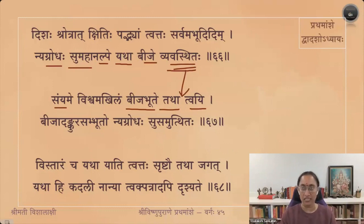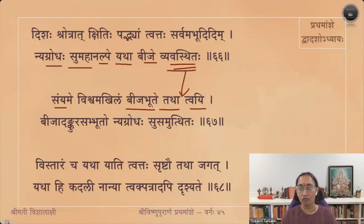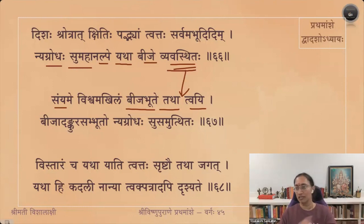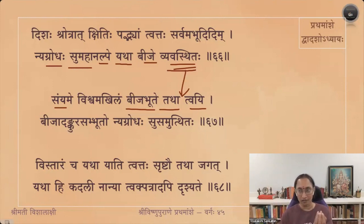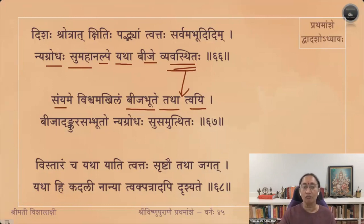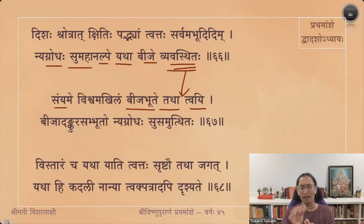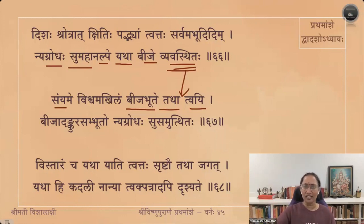Bija Bhute Samyame Tvai — you who are the controller, Samyama, and you are the Bija; everything, Vishwam Akhilam, Vyavastitaha, is present in you. Bijaat Ankura Sambhutaha, Negrodha Su Samutthitaha — from the seed, first Prathamam, Bijaat, Ankura Sambhutaha; then Tadanantaram, Ankuraat Sambhutaha, Negrodha Su Samutthitaha. From that small seed you have a sprout, Ankuraam, and from that sprout, a great tree becomes well established, Samutthitaha — it comes out really well and beautiful.